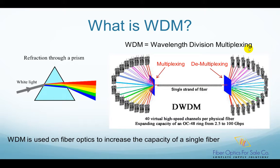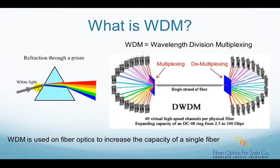As we all have learned from elementary school science, a white light beam can be separated into individual colored light beams by a prism, as shown in this picture. Vice versa, individual colored light beams can also be combined into a single white light beam by the prism, if used in the reverse direction. WDM uses this same idea.